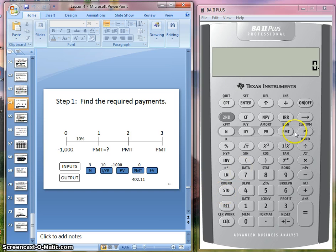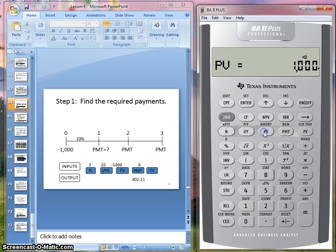First, we want to calculate the payment amount. Before you start each time value of money calculation, you want to go second, clear. Now, $1,000—that is the present value, the amount of the loan principal.